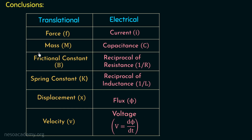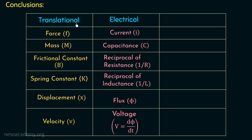We have defined all terms of translational mechanical systems in terms of their analogous electrical network terms. Since force in translational systems corresponds to torque in rotational systems, we can define a torque-current analogy, in which torque in rotational mechanical systems is assumed to be analogous with current in the electrical network. All other rotational terms can similarly be derived.